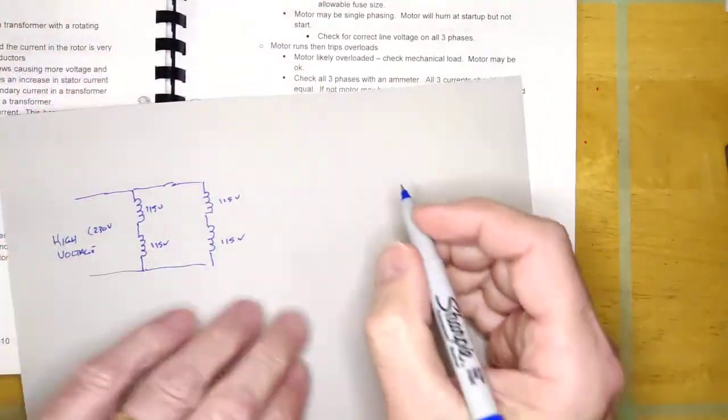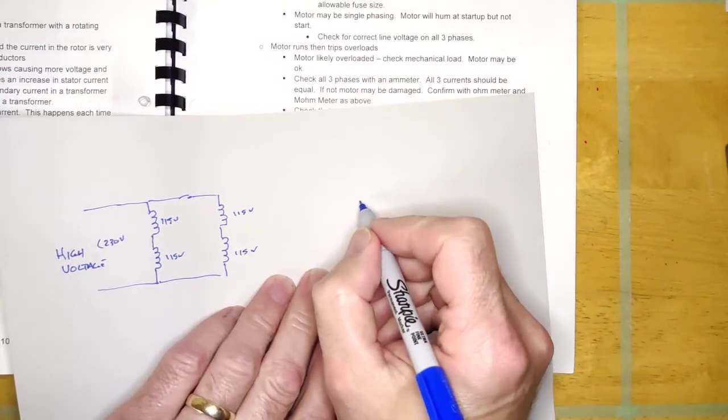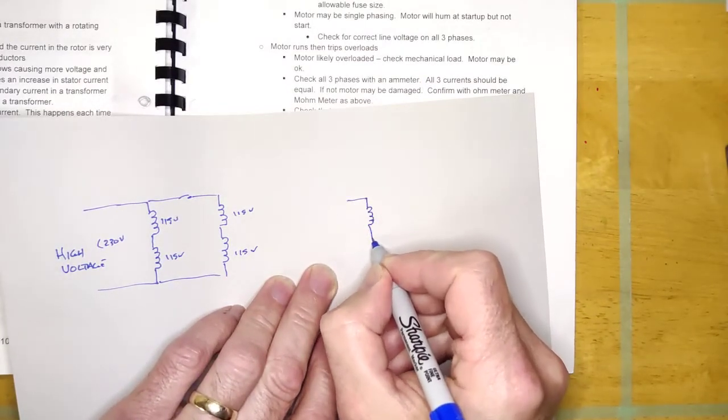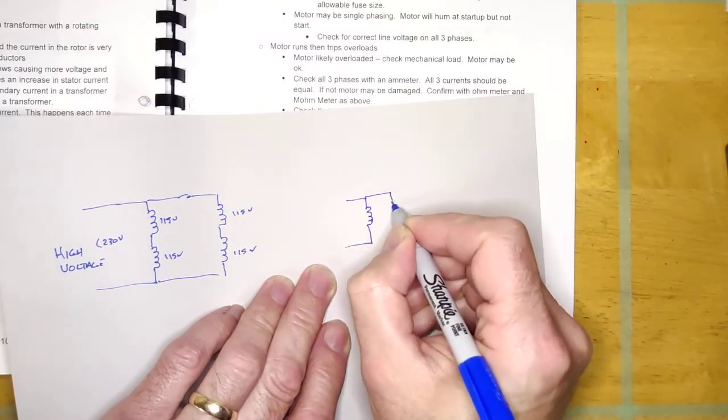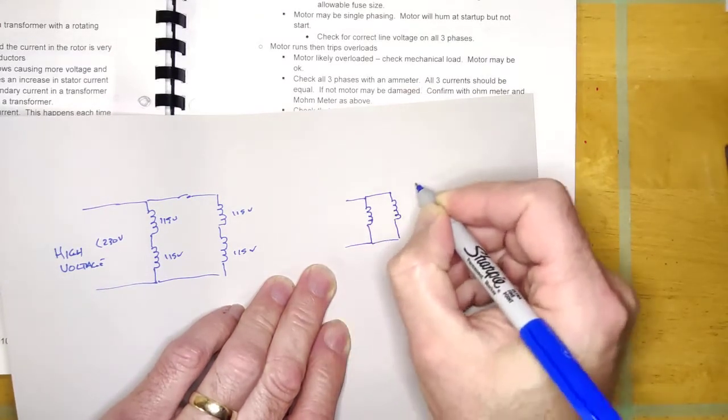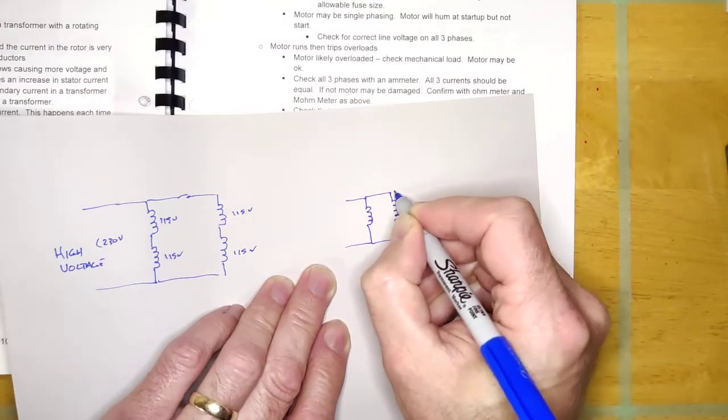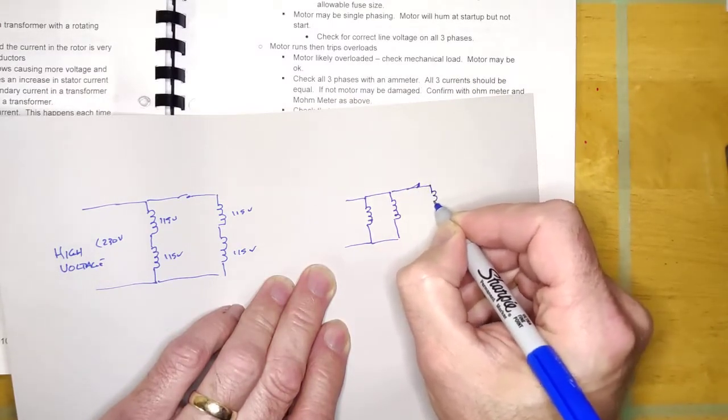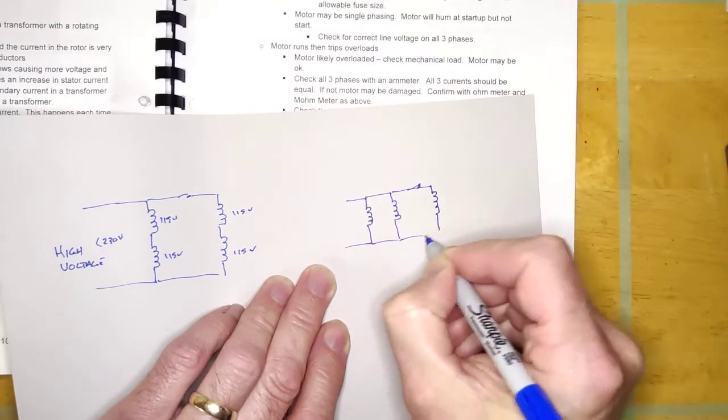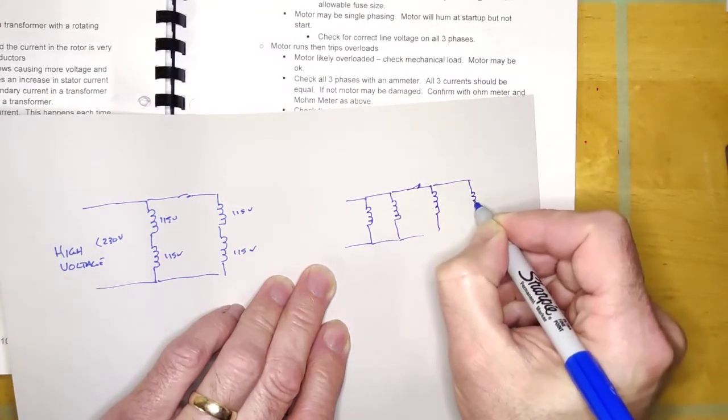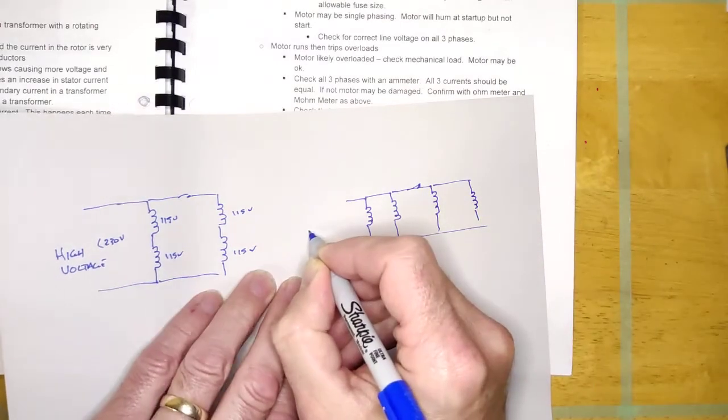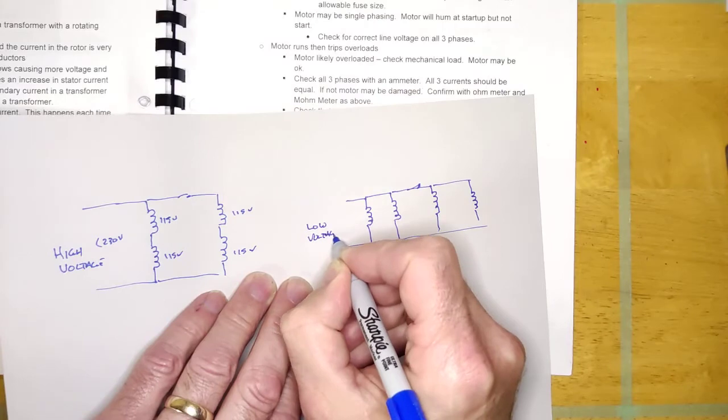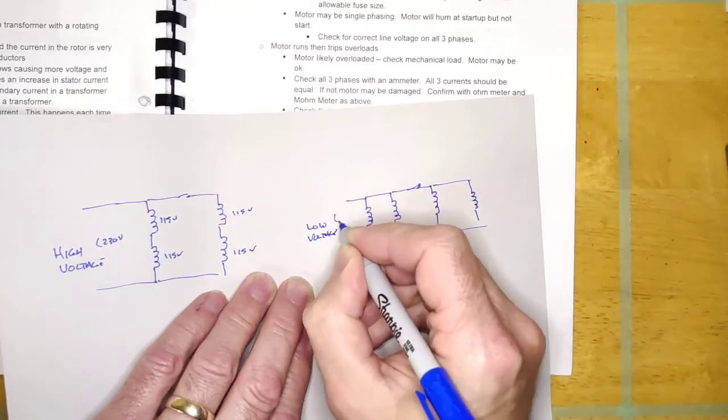And right now this thing would be wired high voltage. Because if it was high voltage, in other words, you had 230 volts from here to here, then this one would see 115 volts, and this one would see 115 volts, and this one would see 115 volts, and that's because they're wired in series, 230 volts.